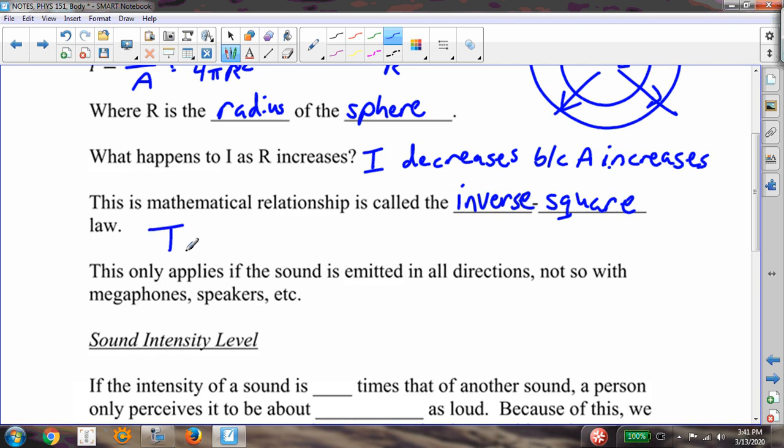The inverse square law, I, is proportional to 1 over r². That I is related to the inverse and to the square of the radius.